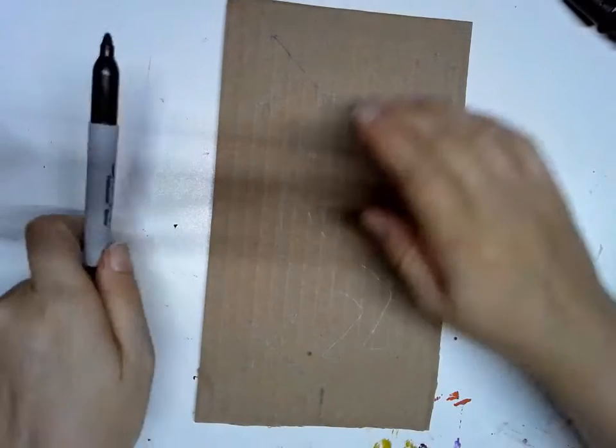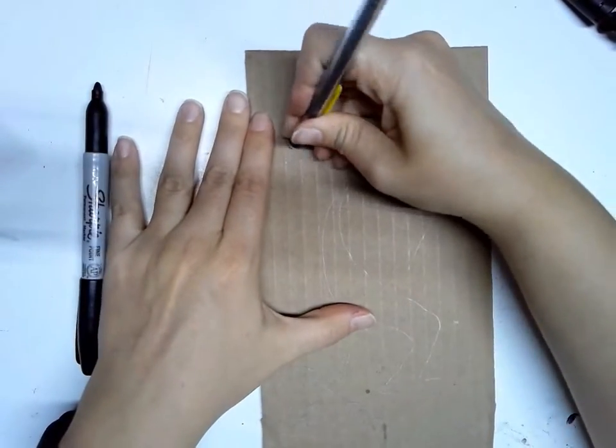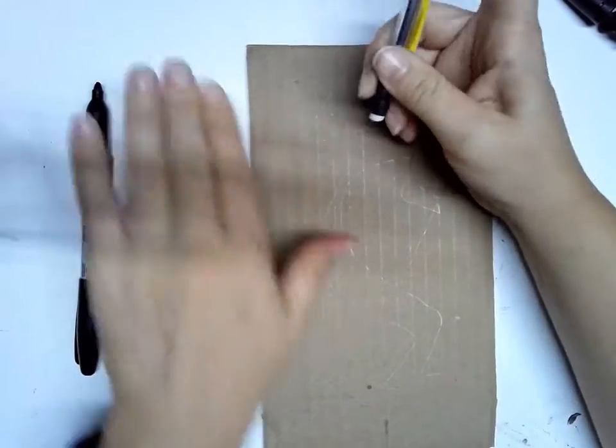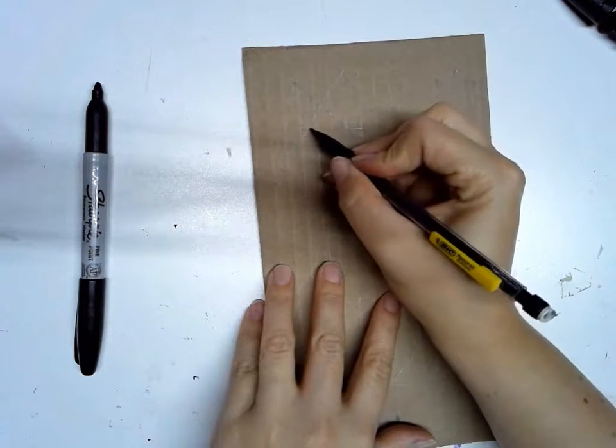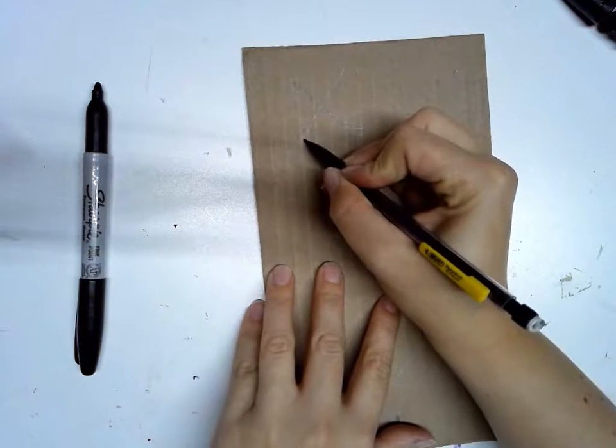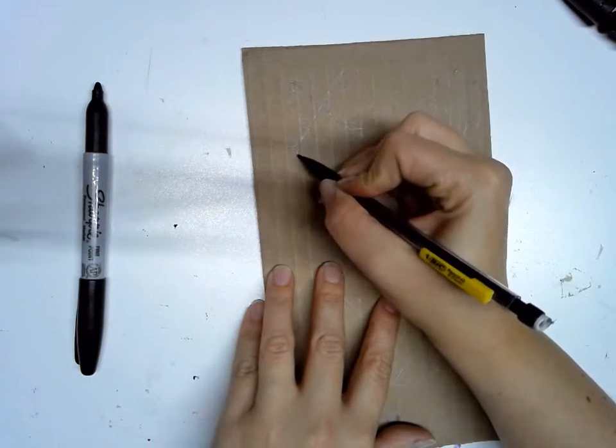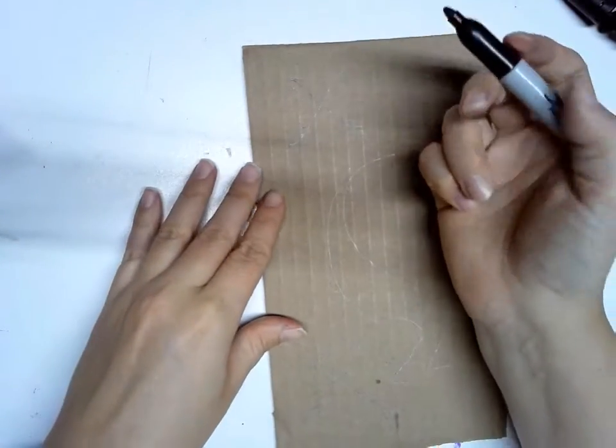Once you have it done in pencil, you are going to take and trace over it with a permanent marker. Make sure you have it the way you want. It's on cardboard so if you make a mistake, you can just erase it and draw your design the way you want, just like on paper. Then I'm going to trace it with my permanent marker.